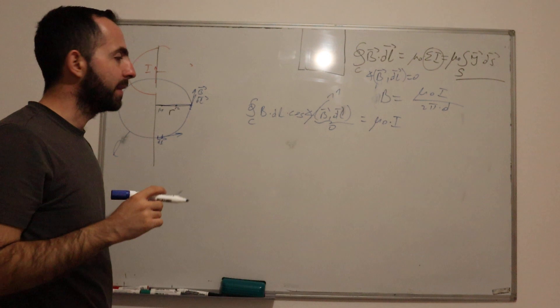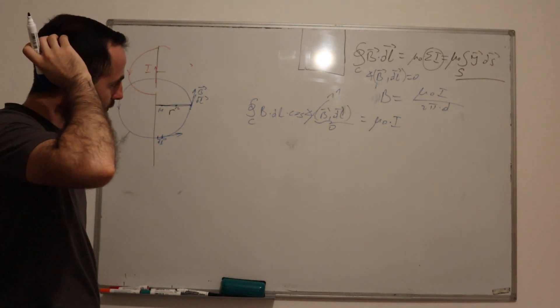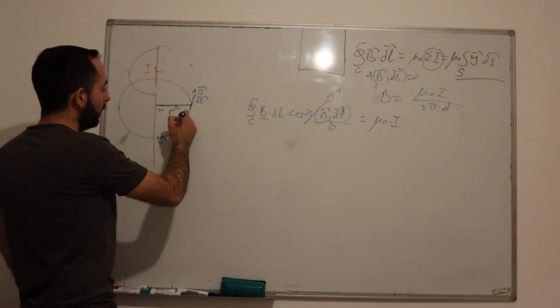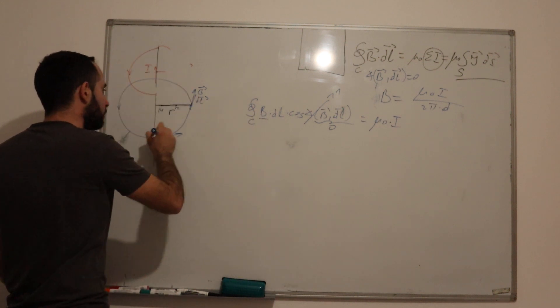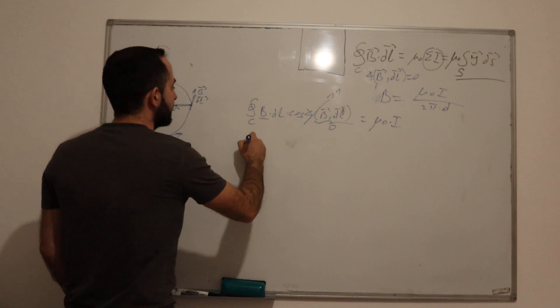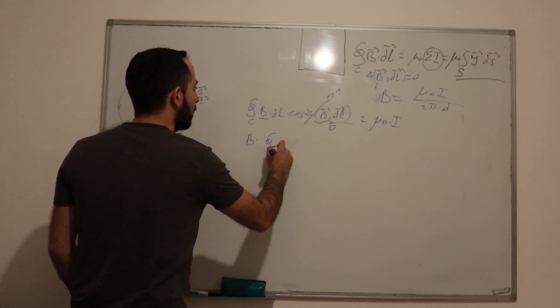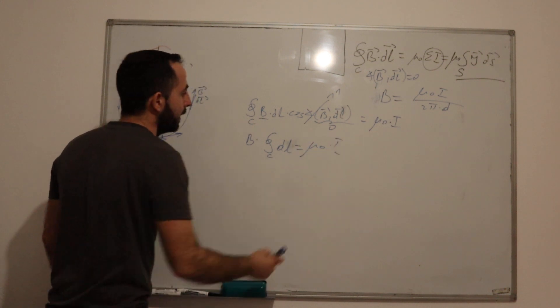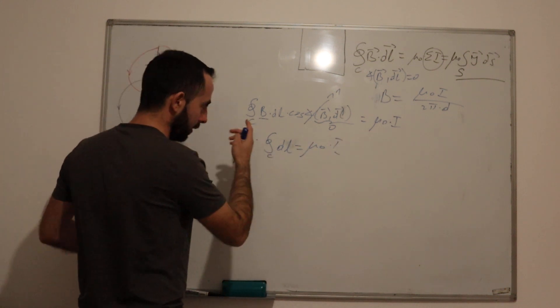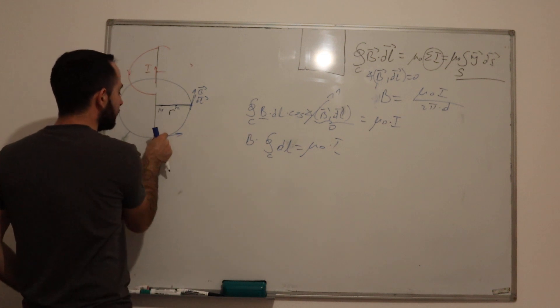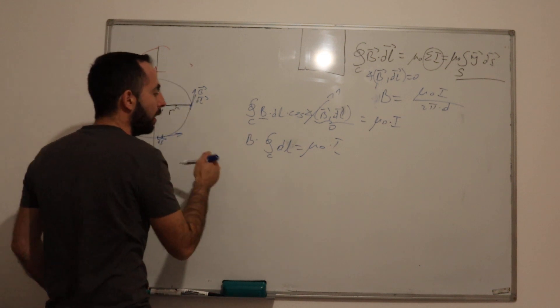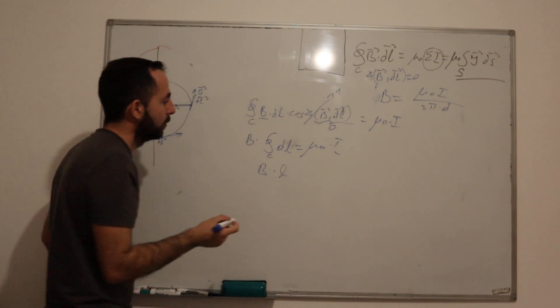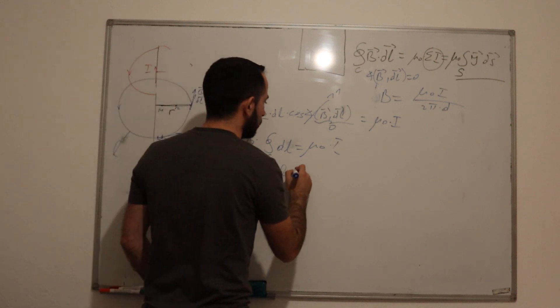Which means I can put B in front of my integral. The integral of dL, the sum of all these infinitely small parts, is equal to the total length of my closed contour.